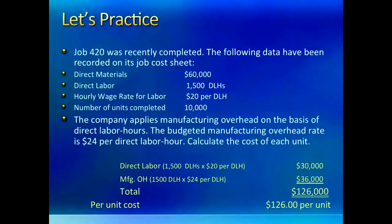Let us practice the steps in job costing with an example. We are given material, labor, number of units made, and the budgeted manufacturing overhead rate. All we need to do is put together the three manufacturing costs of material, labor, and manufacturing overhead. Material and labor are straightforward. Manufacturing overhead is allocated on the basis of labor hours and we are given the rate already, so we multiply this rate by actual direct labor hours consumed by the job. Be careful about what the question is asking — it asks for per unit cost, not total cost of the job. So in the last step we divide total cost by number of units to get per unit cost.